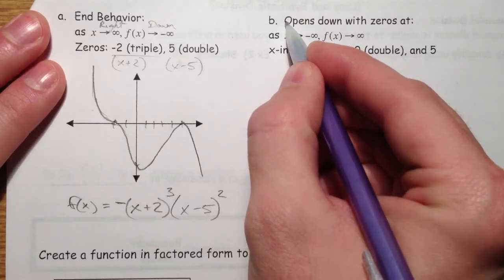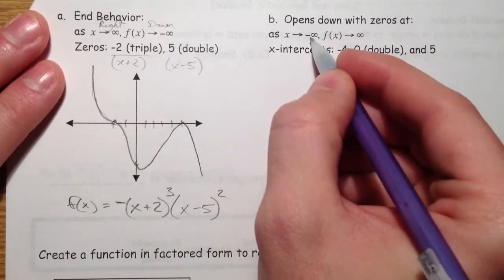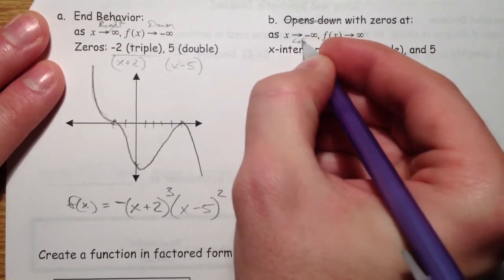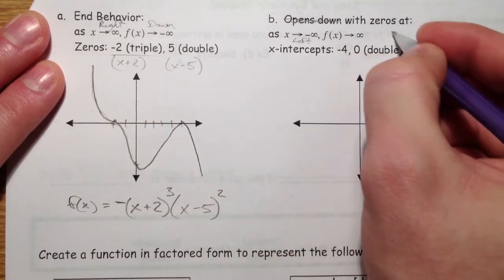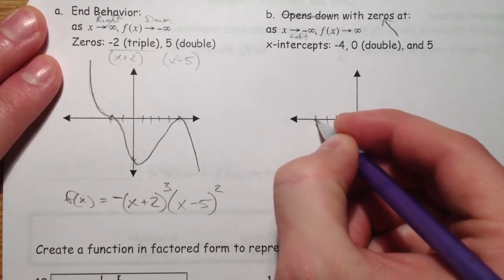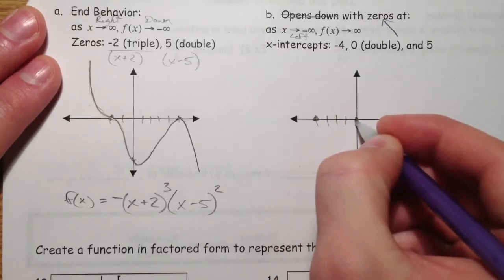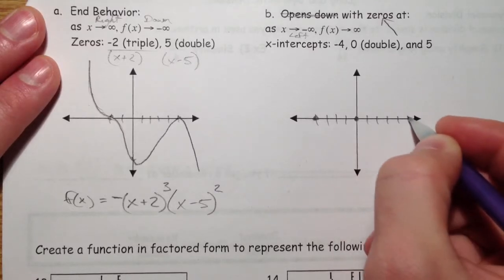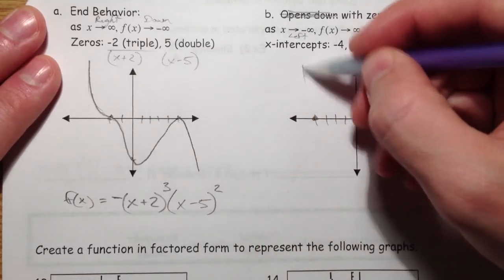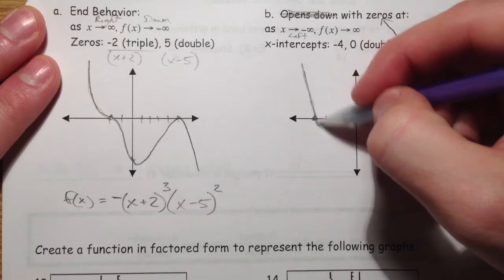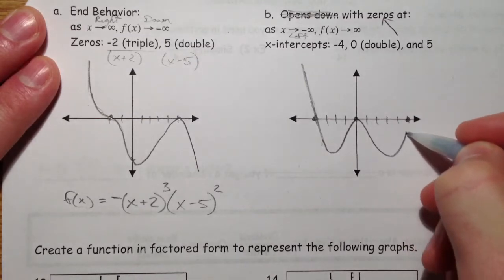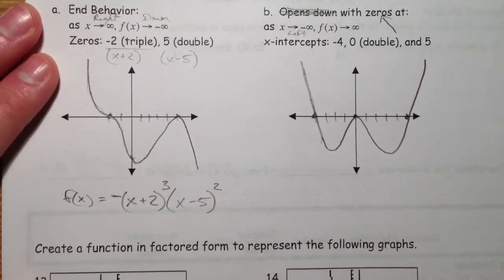Finally, let's pretend this opens down isn't here because we don't necessarily know that it opens down. But as x goes to the left, f(x) goes up. So it's going to go up to the left. x-intercepts at negative 4, 0 is a double root, and 5. So it's going to go from the upper left. I'm going to cross at negative 4. Double root at 0. And let's go through 5.